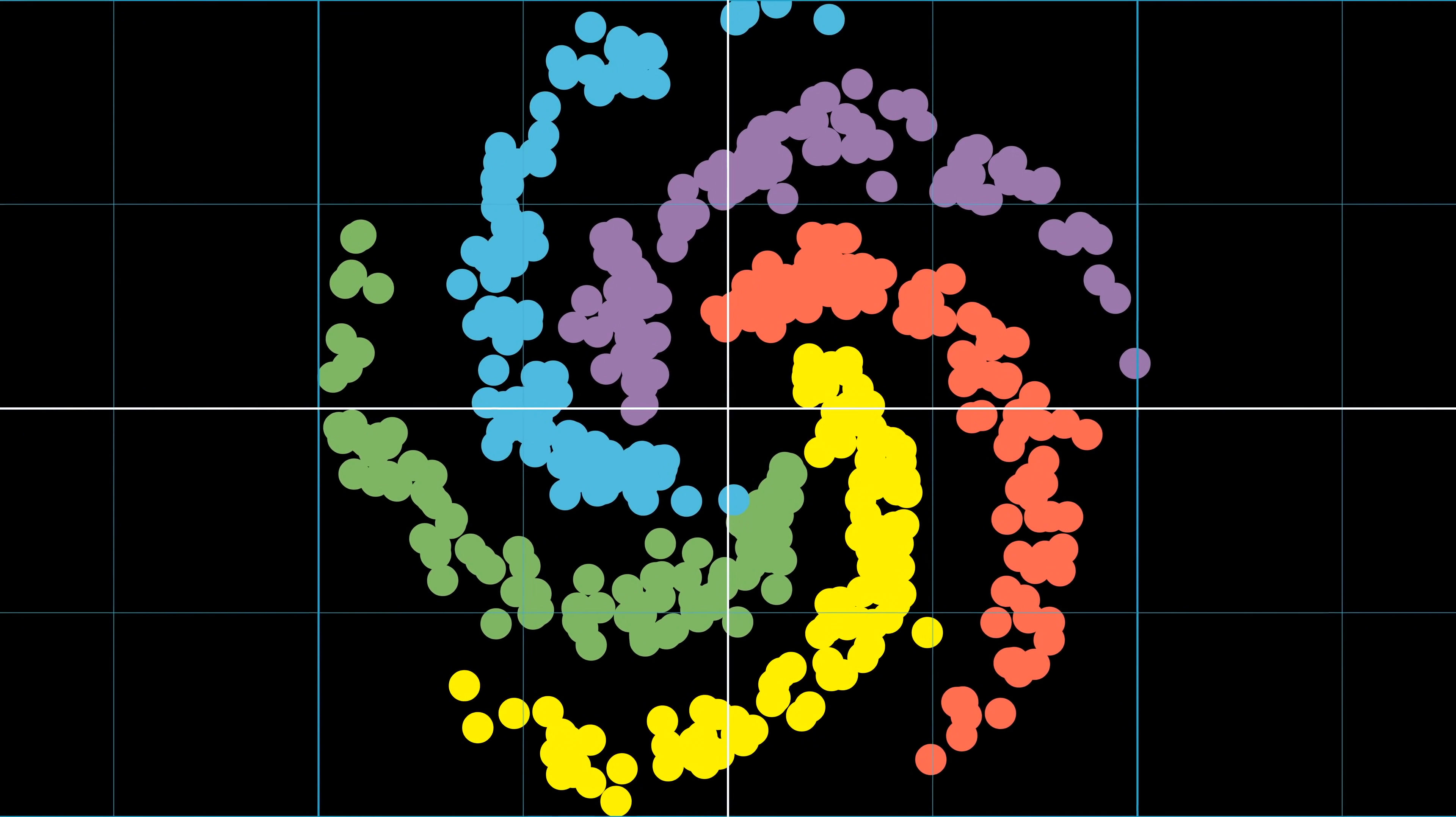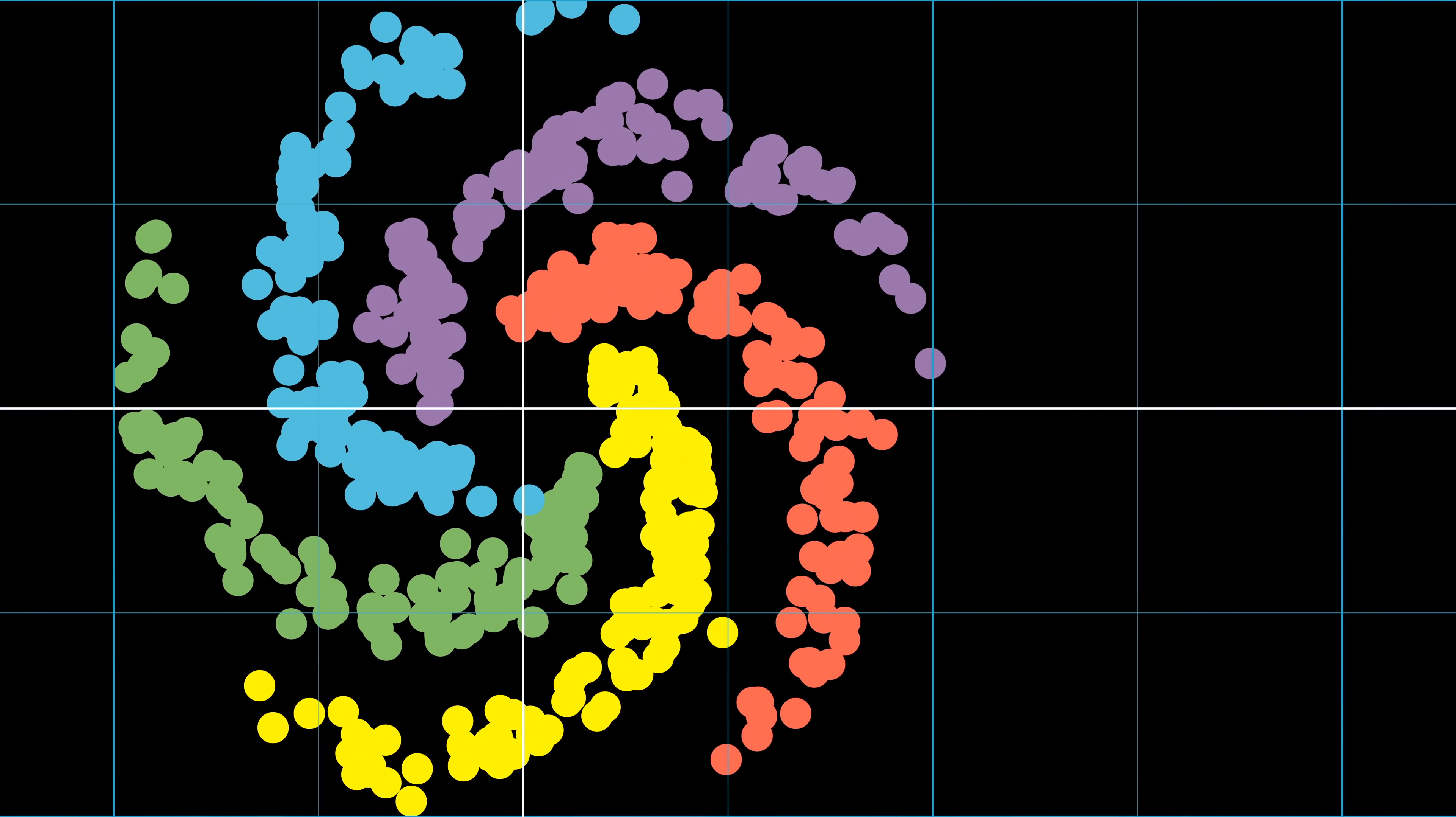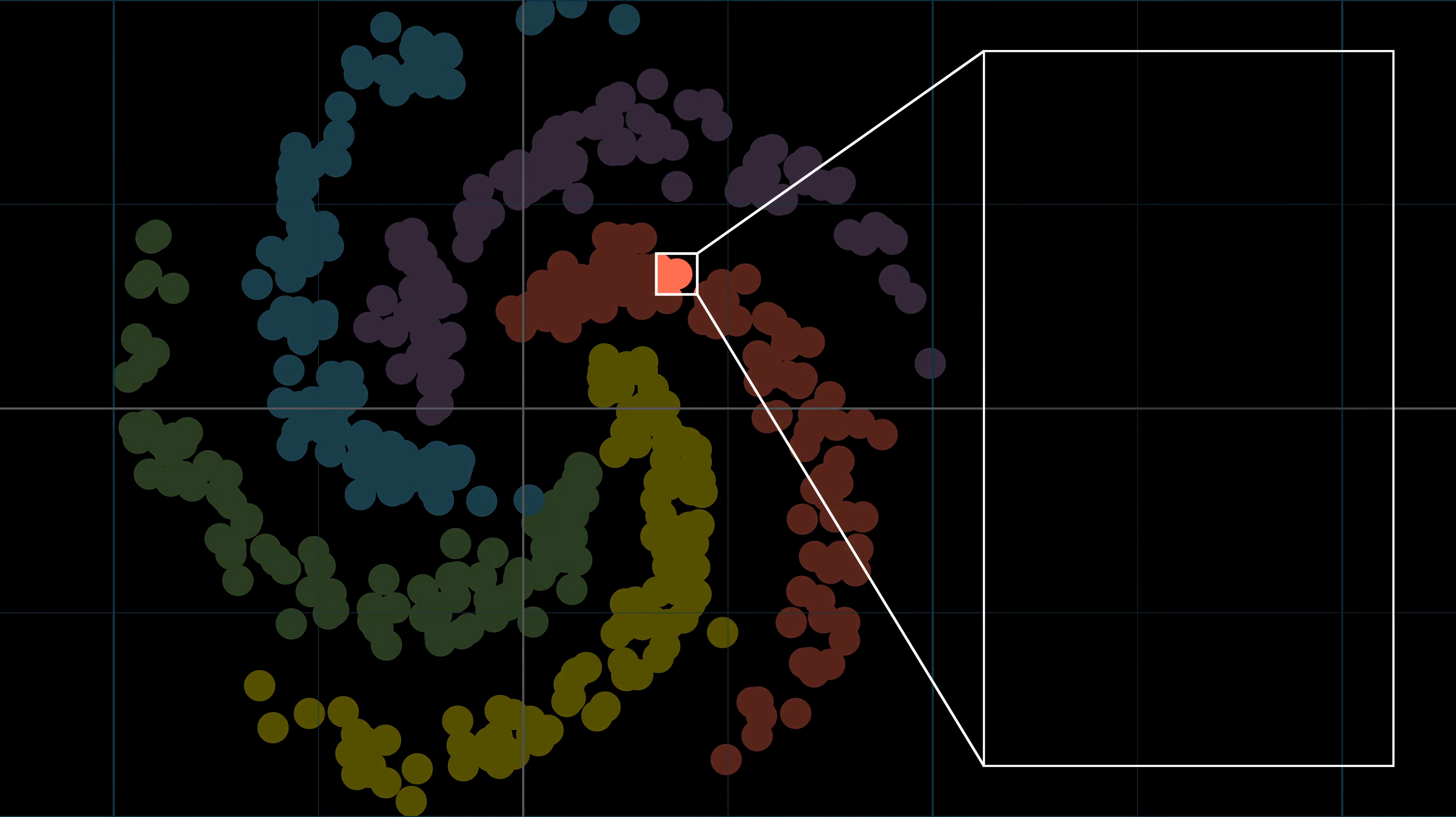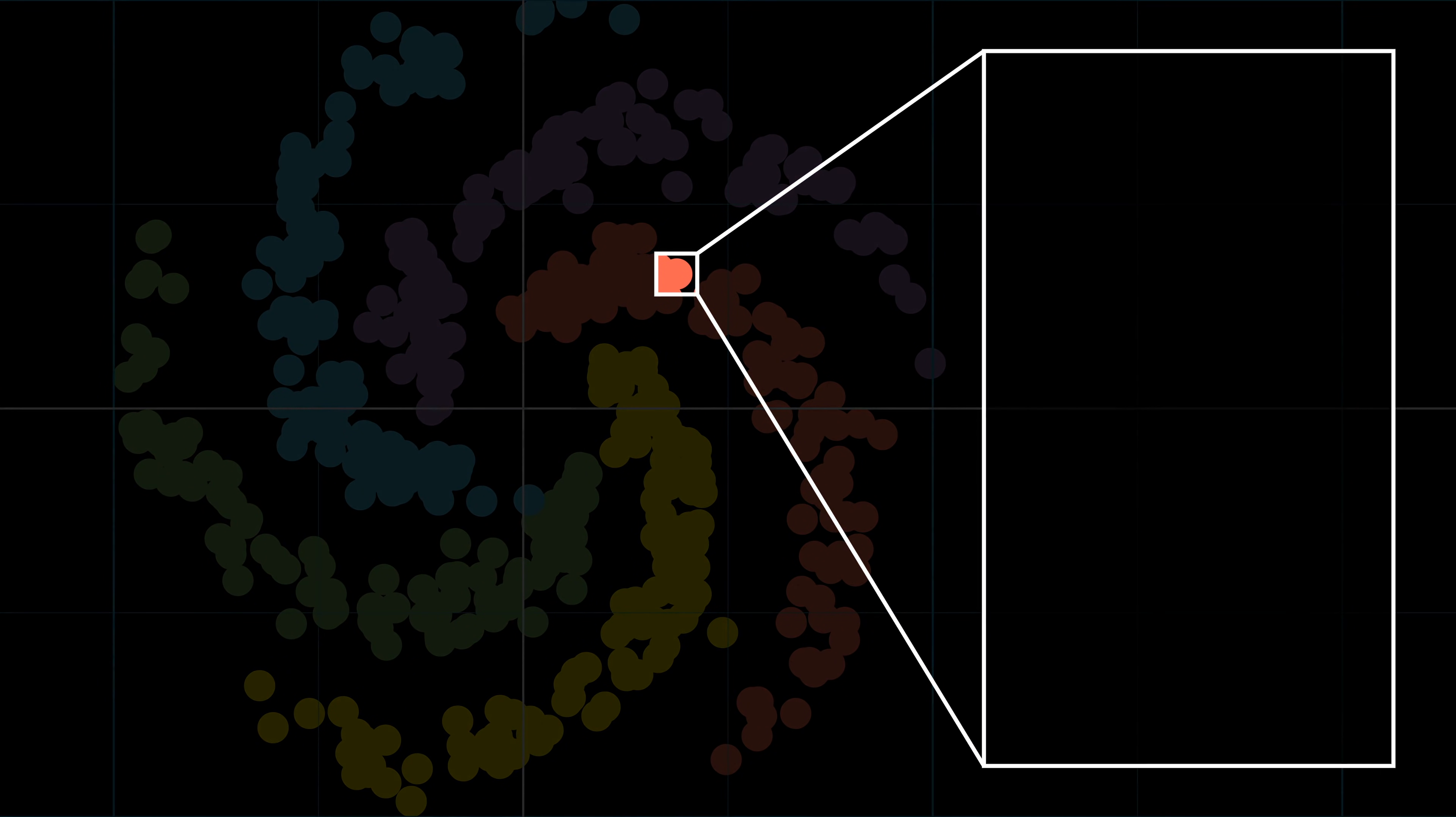Let's take a look at one point from our training data. Here, x represents the input, an x and y coordinate, and y represents the labeled output, a number from 1 through 5, classifying each point into one of the five spirals.